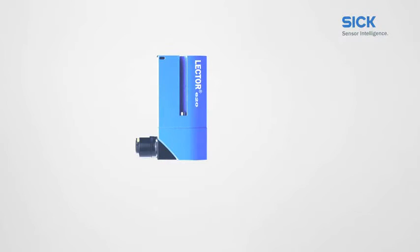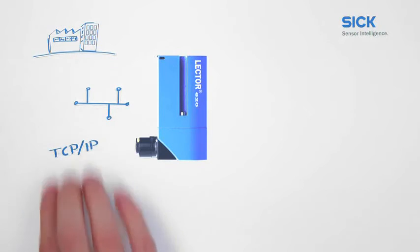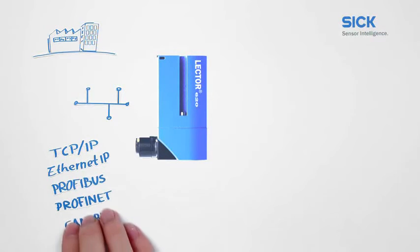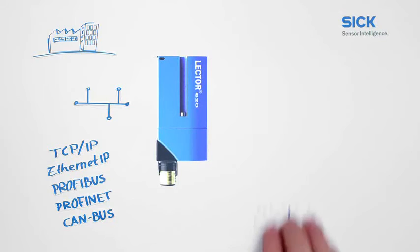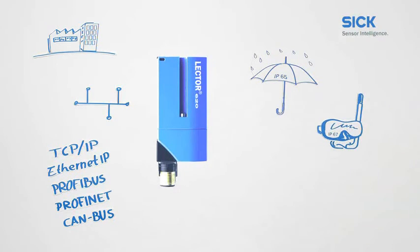Also very simple: the integration of the Lector 620 into industrial networks. Whether you're using Ethernet TCP/IP, Ethernet IP, Profibus, Profinet, or a CAN bus system, the Lector is compatible with all of them. Its compact design and swivel connector enable quick installation even in tight spaces. With its M12 connectors, IP65 or IP67 housing, and M5 mounting holes, the Lector is setting a new industry standard.